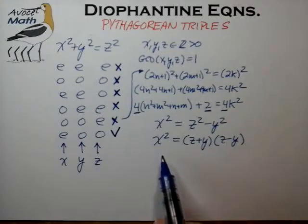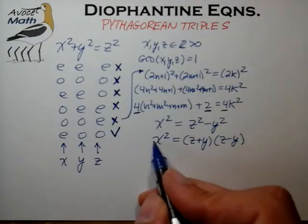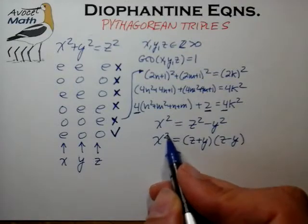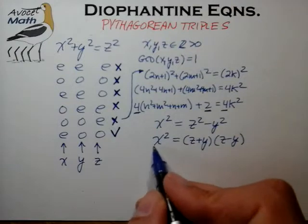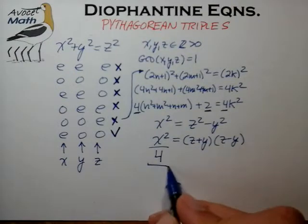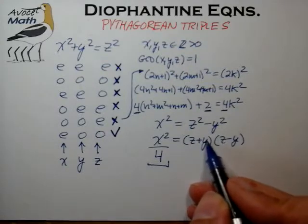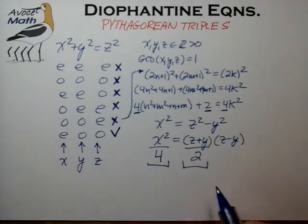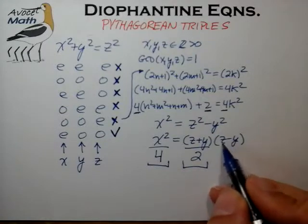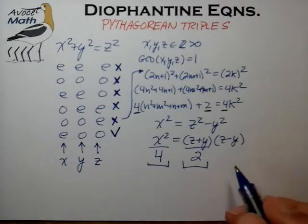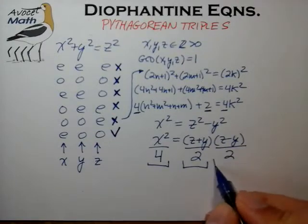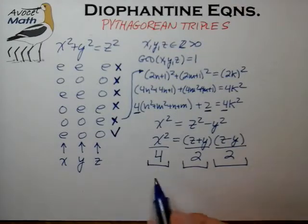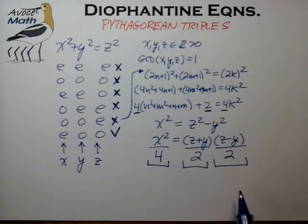We observe that the square of an even number is always divisible by 4, since the factor of 2 gets squared. We also have z + y — an odd plus an odd — which is an even number, so we can divide it by 2 and still have a whole number. Likewise, the difference of two odd numbers is also even, so we can divide (z − y) by 2 and still be left with a whole number.